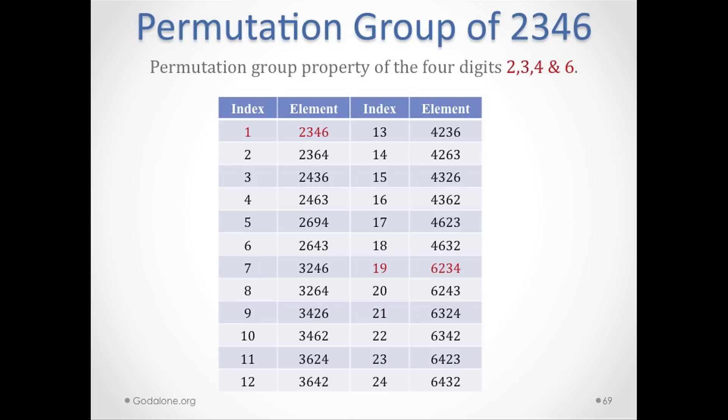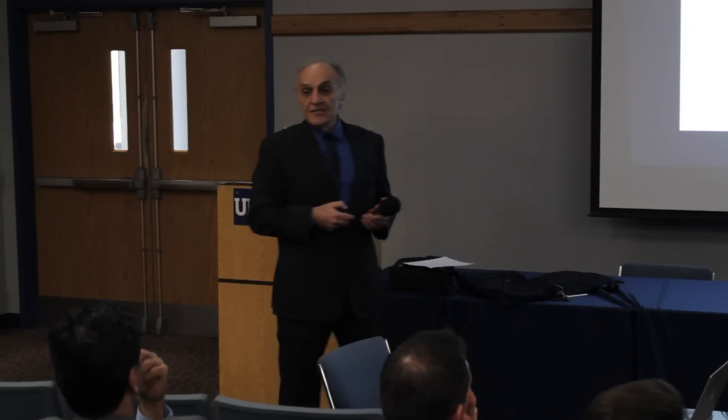Looking at the permutation group property of four digits 2-3-4-6, when you write them down, it yields 24 four-digit numbers. The first one is 2346, which is the number of verses from the beginning of the Quran until the end of chapter 19. The 19th group element is 6234, which is the total number of verses in the Quran.